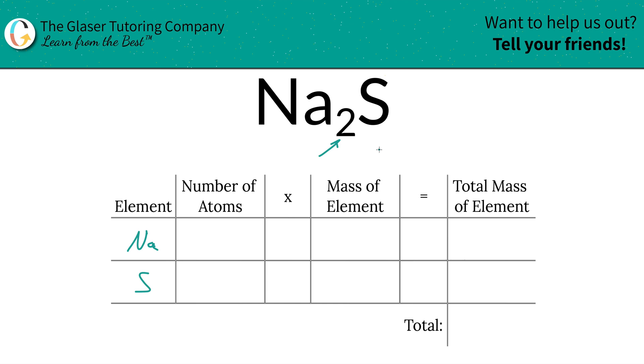Next is then to identify the number of atoms of each, and that's where the subscripts come into play. If there's no subscript at the bottom of the element, just put in a one. That means we've got two sodium, one sulfur.